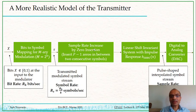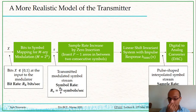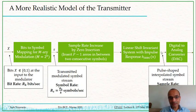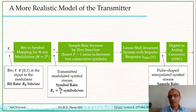After increasing the sample rate by zero insertion, we convolve with the transmit pulse shaping filter — for example, a square-root raised cosine filter, which we looked at in an earlier lecture. Then in the traditional communication transmitter, the output of the pulse shaping filter is connected to a digital-to-analog converter, whose output is an analog signal. This is a slightly more realistic model of the transmitter.